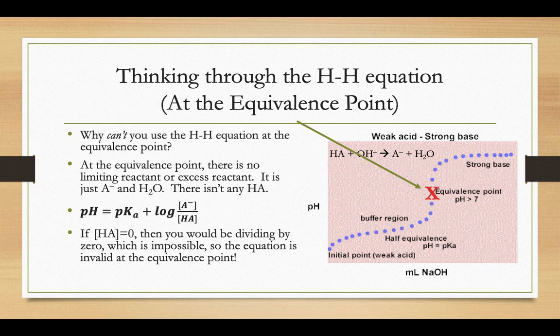So what about at the equivalence point? You can't use the Henderson-Hasselbalch equation at the equivalence point, but why not? In order to use the Henderson-Hasselbalch equation, you need both A minus and HA available. But if you're at the equivalence point, there is no limiting, no excess reactant. They get all used up. So the HA is gone, the hydroxide's gone, and all you have left is A minus and water. There isn't any HA. So if you tried to use the equation, and HA is equal to 0, when you plug in 0 at the bottom of that log, you're dividing by 0, which is mathematically impossible. So the equation is just invalid at the equivalence point.